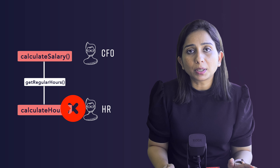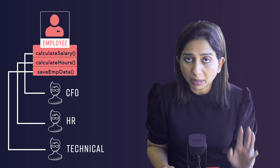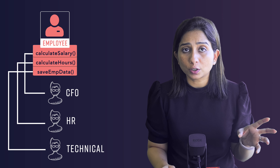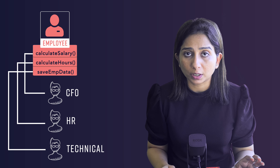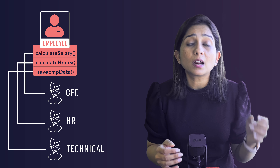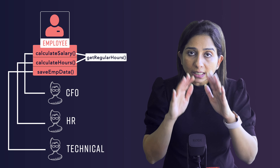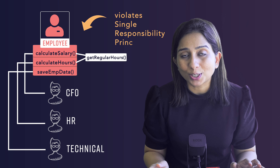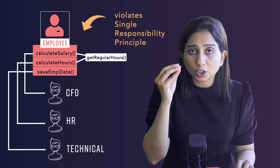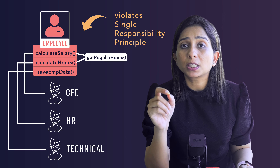So what actually happened here? One class exposed two or three different public methods corresponding to different stakeholders of the software. One actor does not need to know anything about the other actor, yet a change requested from one of them impacted the other one. This is the breaking of the Single Responsibility Principle — this module is encapsulating different functionality catering to different actors of the system.